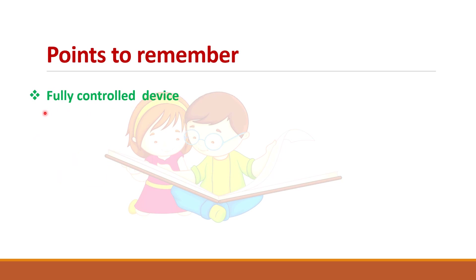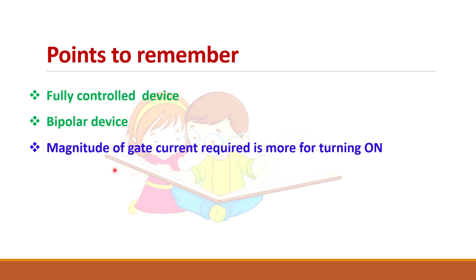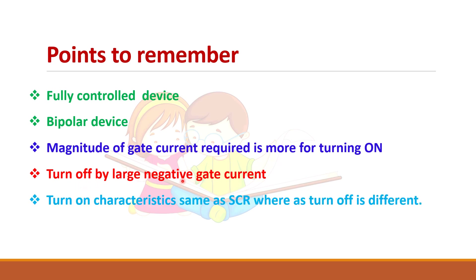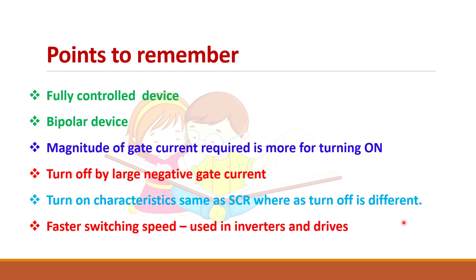Points to remember: GTO is a fully controlled device where turn-on and turn-off are controlled by gate current. It is a bipolar device. The magnitude of gate current required is more. It is turned off by a large negative current. Turn-on characteristics are the same as SCR but turn-off characteristics are different. It has faster switching speed and is used in inverters and drives.